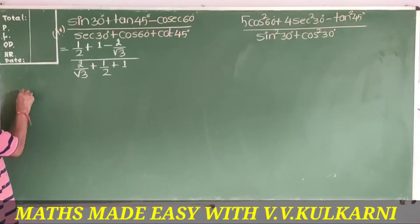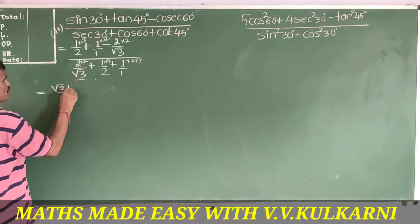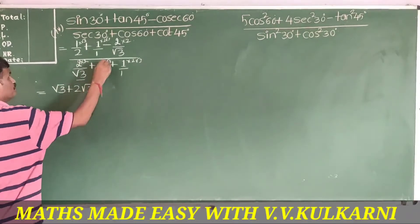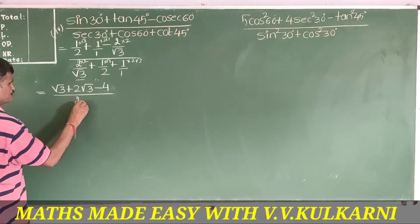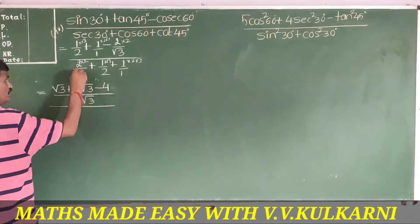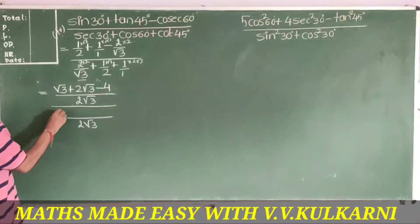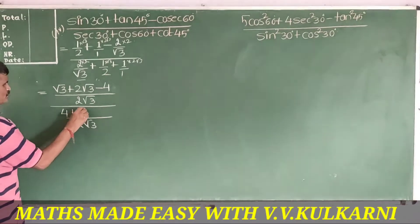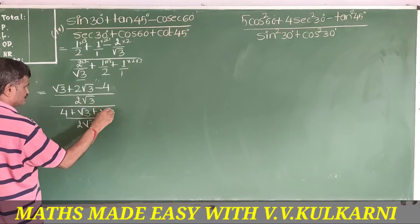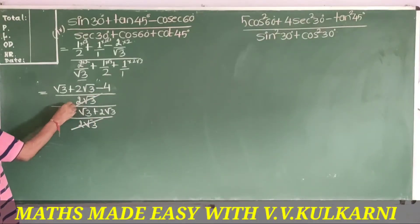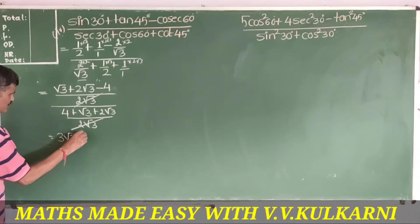If you simplify, it will be: 1 into √3 is √3, and 2√3 minus 2 into 2 is 4, divided by 2√3. Simplifying with denominator 2√3: you get 4 plus 1, giving √3 plus 2√3. The 2√3 cancels, leaving 3√3 minus 4.